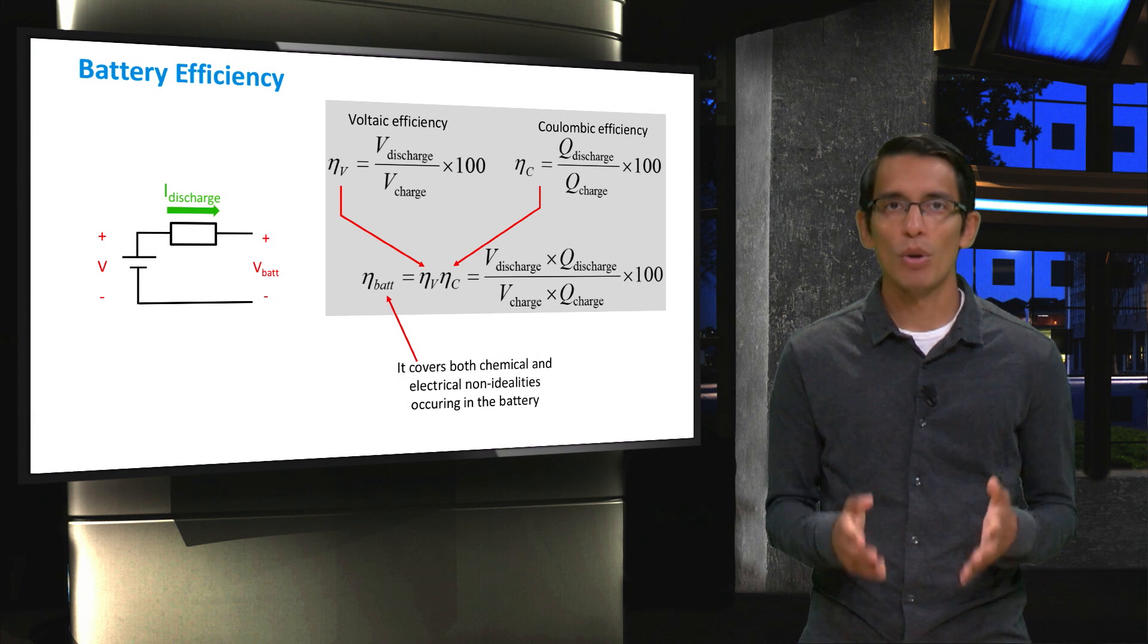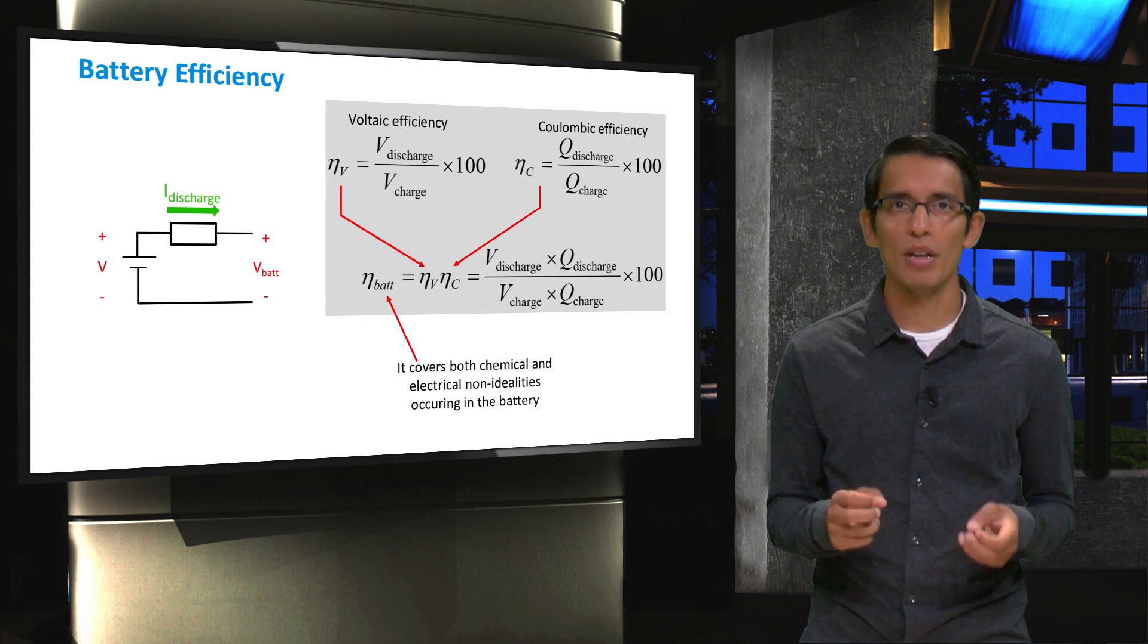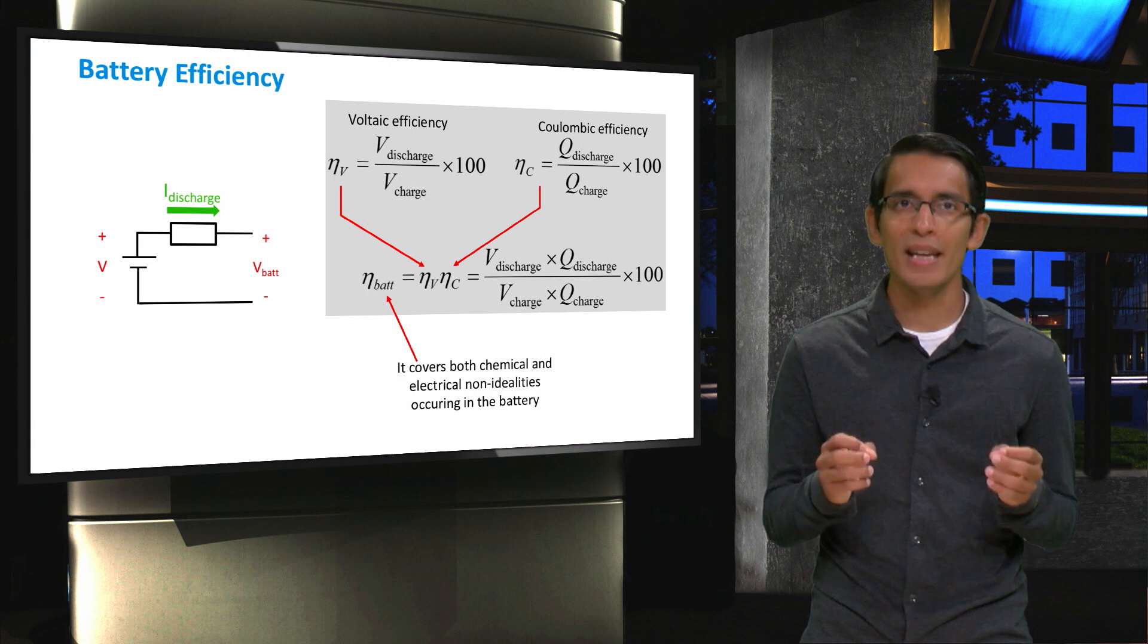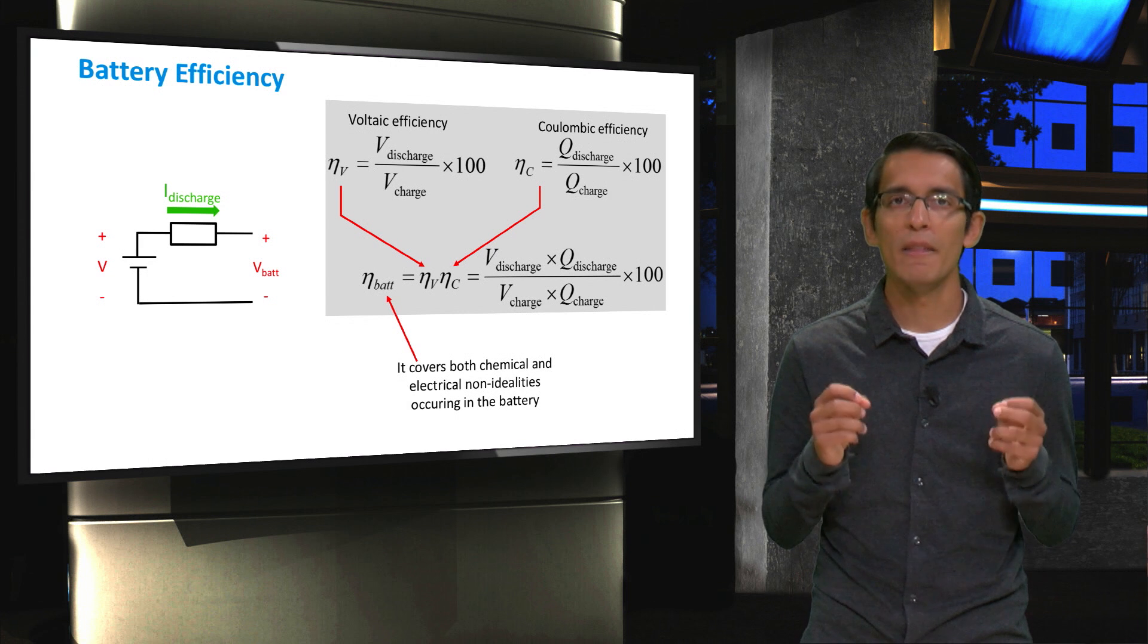When comparing different storage devices, this round-trip efficiency is usually considered. Since this efficiency is a product of voltage losses and charge losses, it includes all the effects of different chemical and electrical non-idealities occurring in the battery.